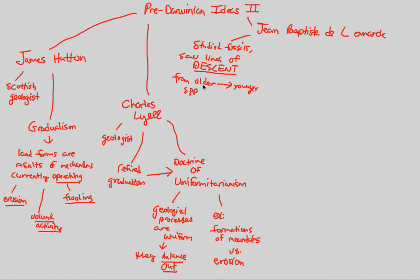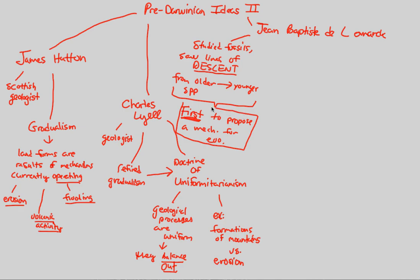Lamarck saw a descent mechanism from old, extinct species to younger, more present species today. This is the key idea to understand about Lamarck — do not forget this. Jean-Baptiste de Lamarck, L-A-M-A-R-C-K, was literally the absolute first to propose a mechanism for evolution. It was not Darwin who was first. The first man to propose evolution — descent from an older to a younger species — was Jean-Baptiste de Lamarck.